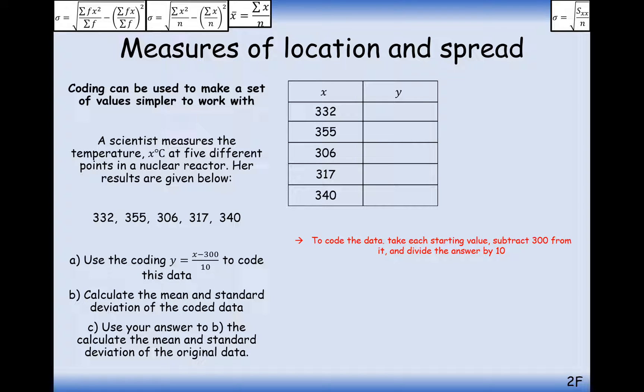So first of all, it would be a good idea to convert all of these data points using the coding. So we're going to subtract 300 from it and divide by 10. So these are the values that we get. And now we'll work out the mean, or we won't work out the mean yet, we'll do the squared values first for the standard deviation later on.